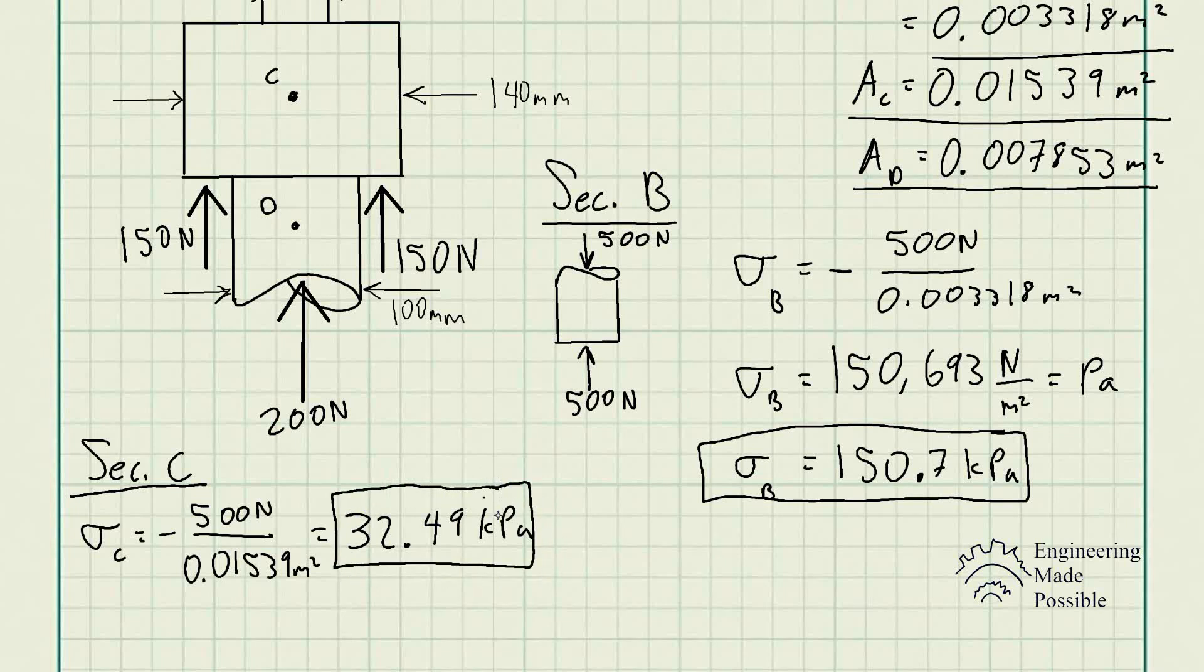Now, for section D, it's actually going to be a little bit different. If I were to cut it here, and let's say the bottom portion, just analyze the bottom portion, I will see the only external load being applied here would be 200 newtons. Now, if I went ahead and also did the free body diagram on the top portion, it would also be 200 newtons. You would have 300 newtons going up, and then on the very top portion, we have 500 newtons going down. Then, it would still be 200 newtons as the external force at point D.